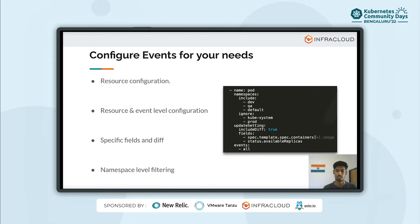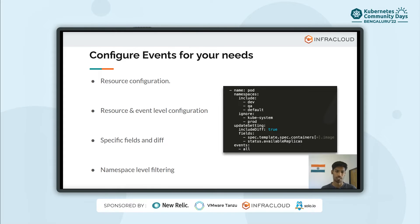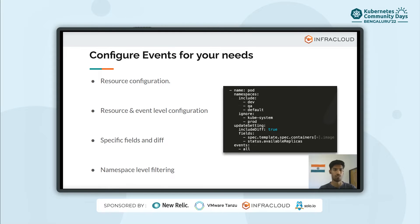BotKube can monitor resource events. Thanks to BotKube configuration, it provides fine-grained configuration where you can filter out the events you are really interested in. You can filter resources by event types and even namespaces. For update events, you can even filter the specific fields in which updates you are interested in. More information can be found in the documentation.